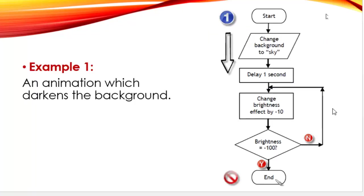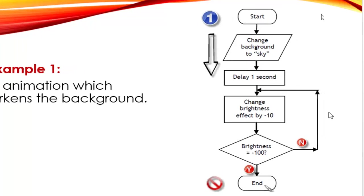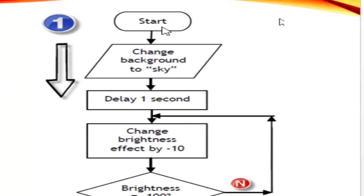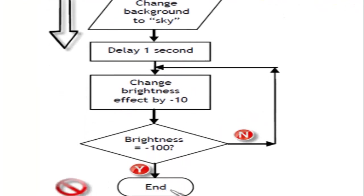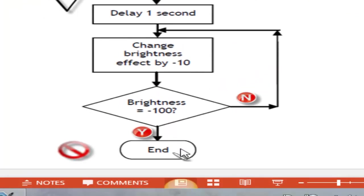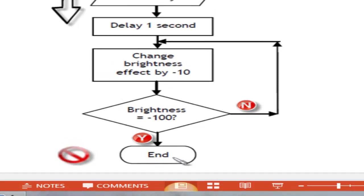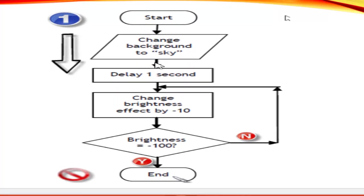In this example 1, it is an animation which darkens the background. In the flowchart that is related to the animation, there is the start button and the end button. And these are both represented by rounded rectangles that is at the top and the bottom of the flowchart. When we read the flowchart, it is from top to bottom. So we start from number 1, start using arrows to go downwards.